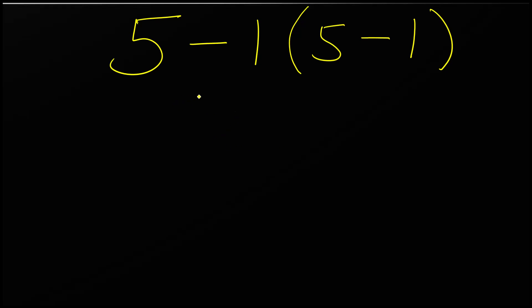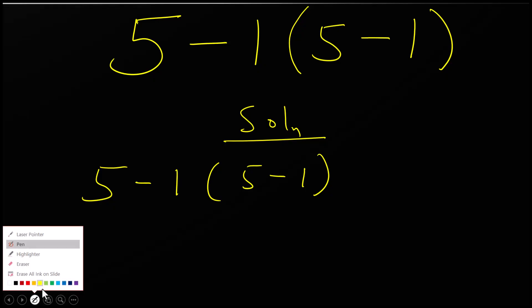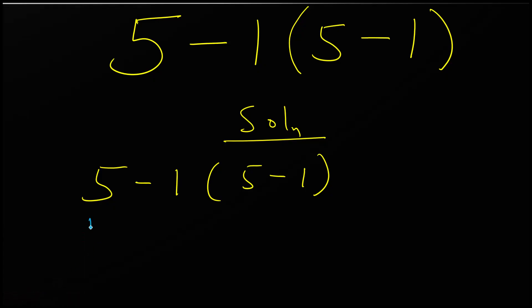What is the answer for this expression? We have 5 - 1(5-1). We might say 5 - 1 is 4, and the parenthesis 5 - 1 is also 4, therefore 4 times 4 equals 16. But...